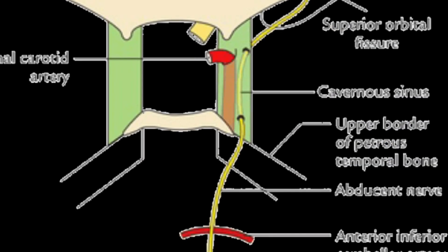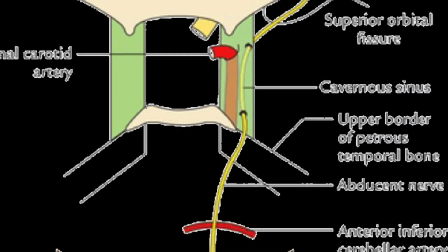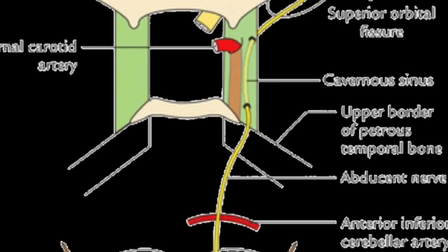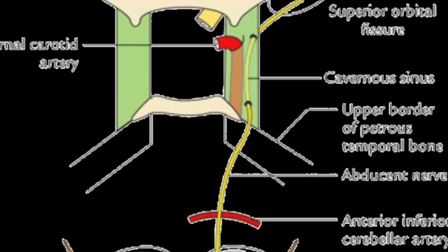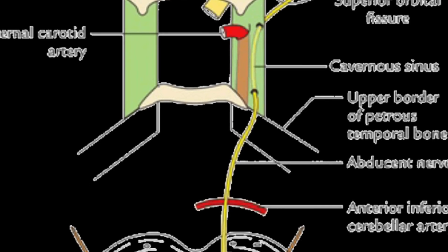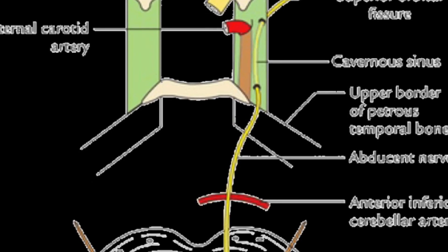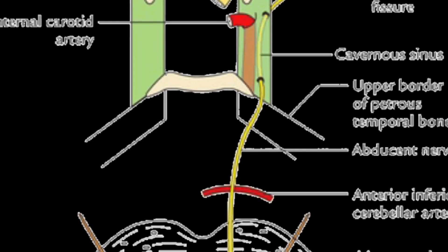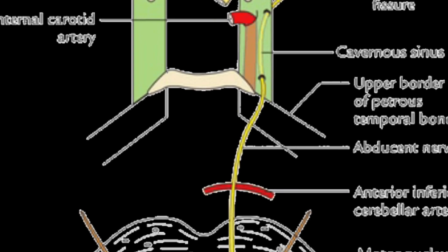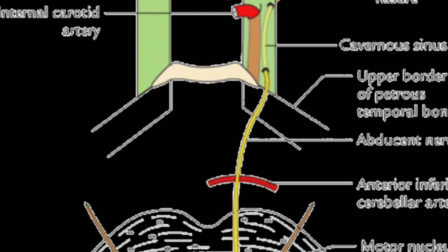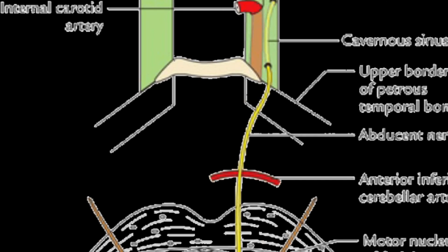Nerve trunk infarction secondary to diabetes, arteritis, and atherosclerosis occurs similarly to the third and fourth nerve, with the sixth, third, and fourth nerves all potentially involved in the processes of arteritis, atherosclerosis, and diabetes.